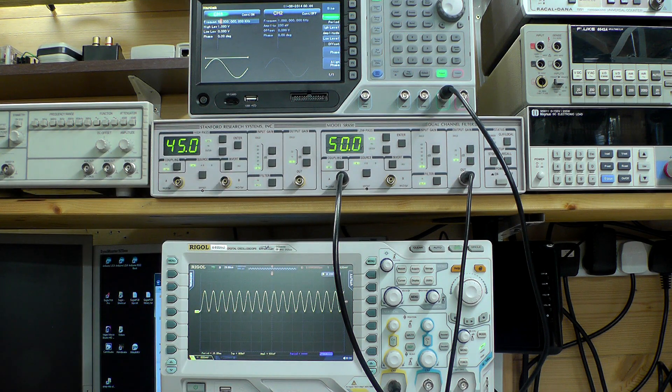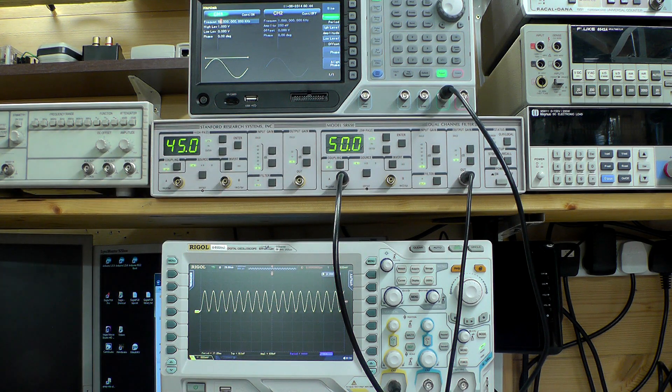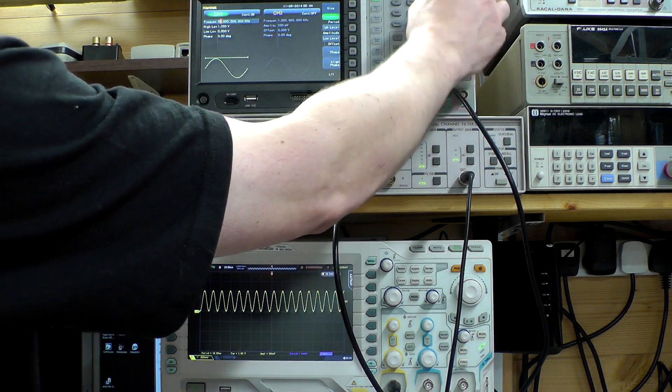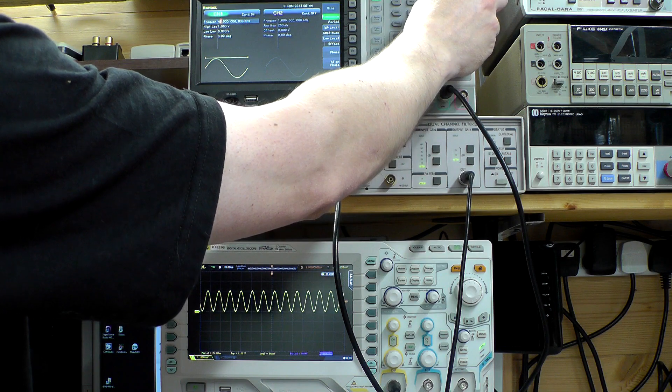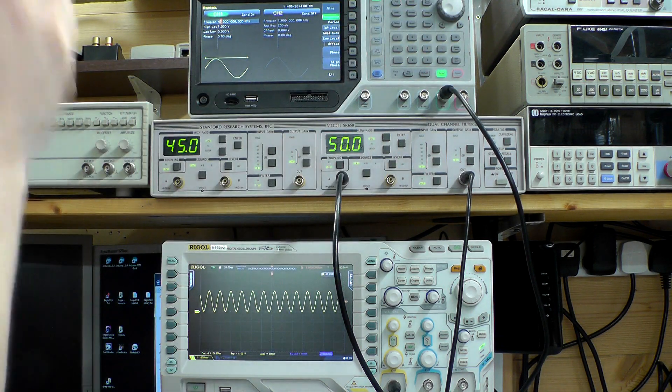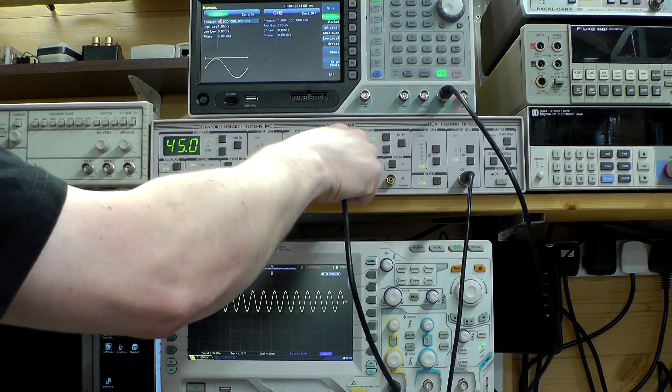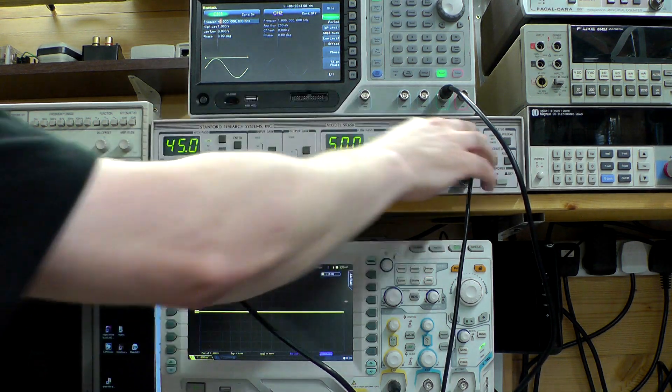So channel 2 is working exactly as it should be, the low pass filter. So what I'll do now is I'll wind it back down to 47 kilohertz and I'll shift over to channel 1 which is the high pass filter.